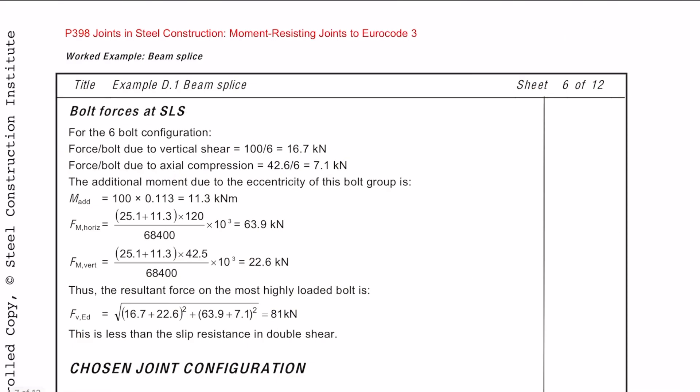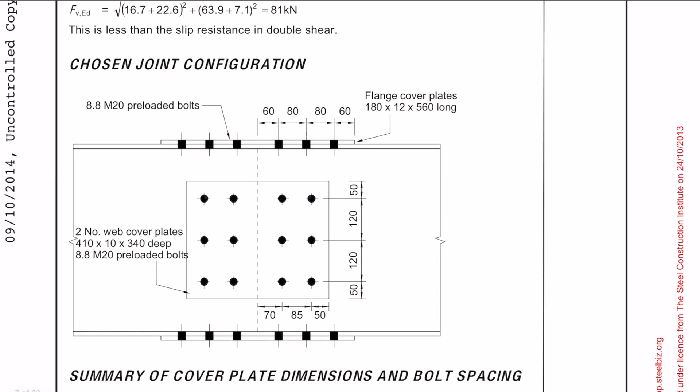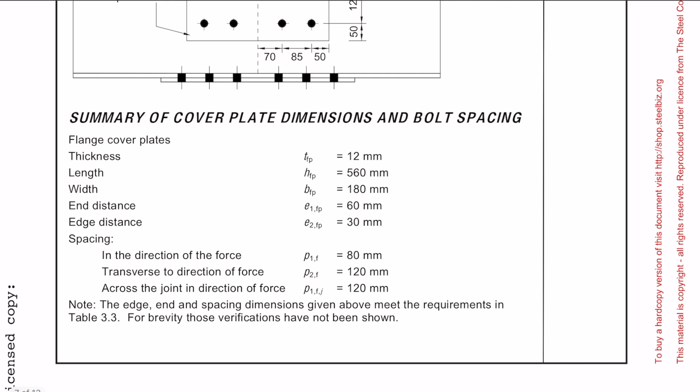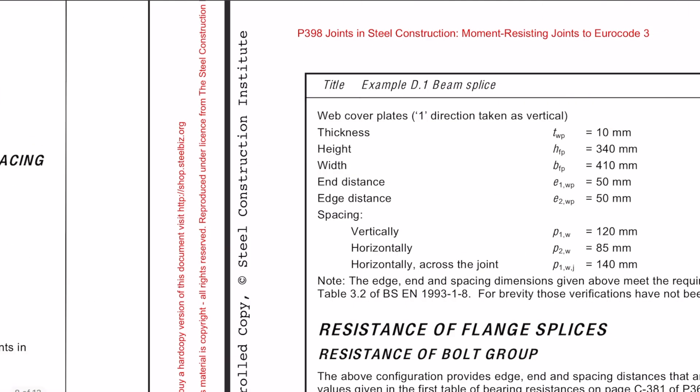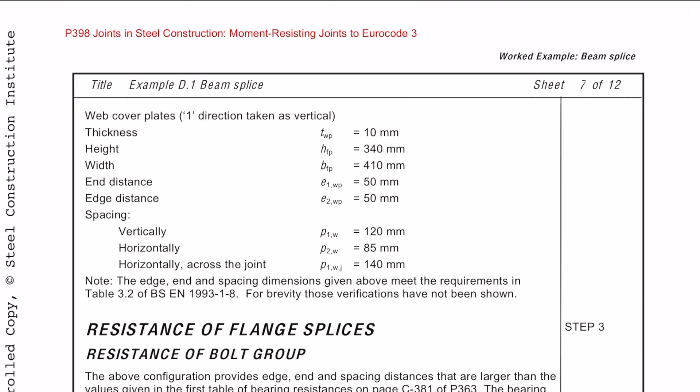And here we're basically going to repeat the same steps, but for the SLS loads. So now it's a good time to draw a diagram and put some dimensions on the bolt configuration, which we've just calculated. When you're listing the direction of the spacing, make sure that it's written very clearly.